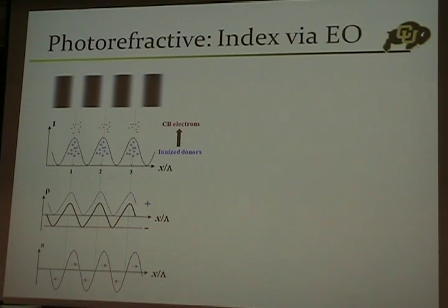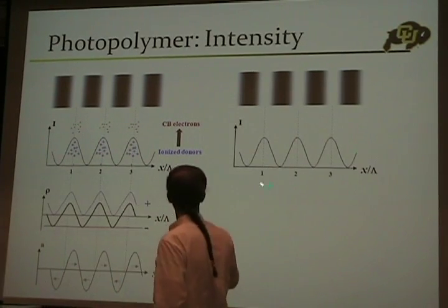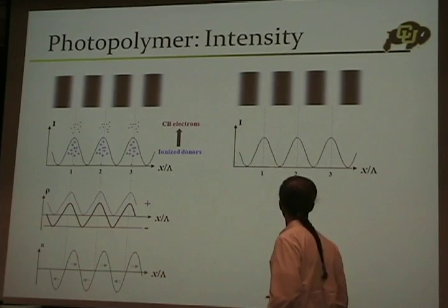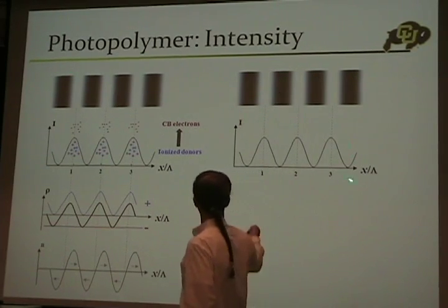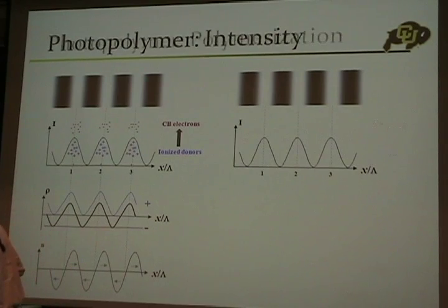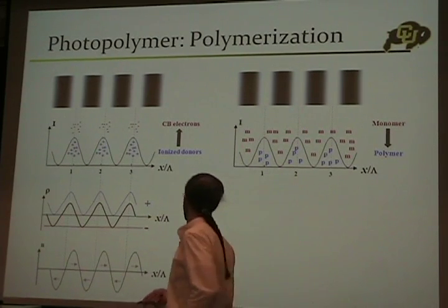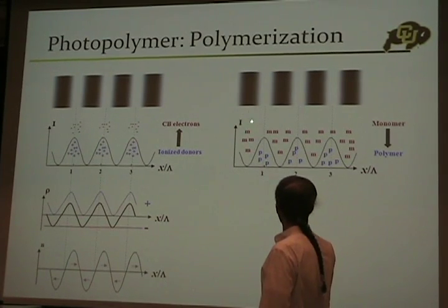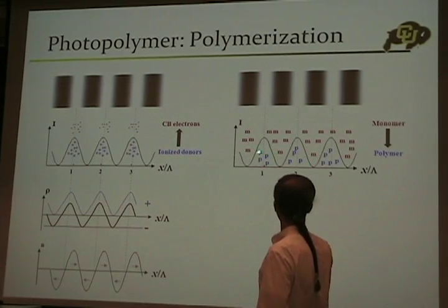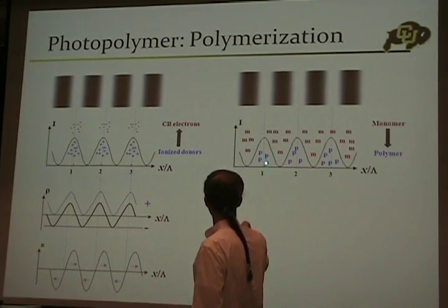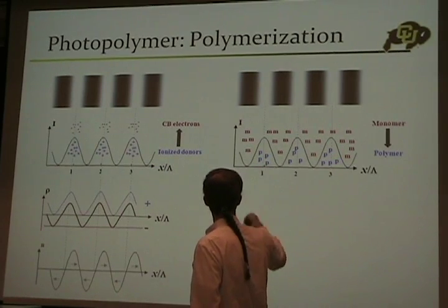I'm going to walk you through a shockingly similar-looking set of pictures — now for a photopolymer. I'm going to make the same exact thing and shamelessly copy the picture over here to save myself time. In a photopolymer, I've got a bunch of monomer. I've also got some sort of photo initiator. The important part is wherever I have bright light, the monomer is going to turn into polymer. So I lose the monomer in the bright regions, and I gain polymer there. Wherever there is bright light, I make polymer and lose monomer.